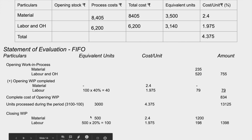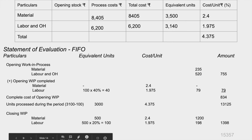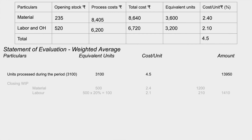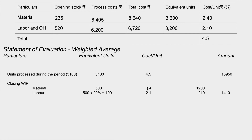Closing WIP is not transferred; it remains. Under weighted average, 3,100 units are transferred at 4.5 rupees per unit, giving the total transferred amount. Closing WIP: materials 100%, labor 20%; labor per unit is 2 rupees. Multiplying gives the closing WIP value. This completes the total process cost under weighted average method. The process account is then prepared for both FIFO and weighted average methods.